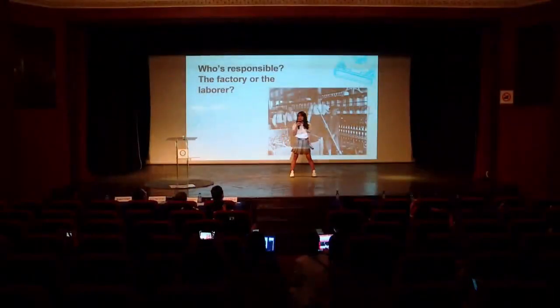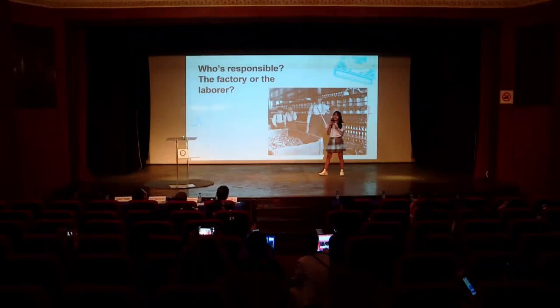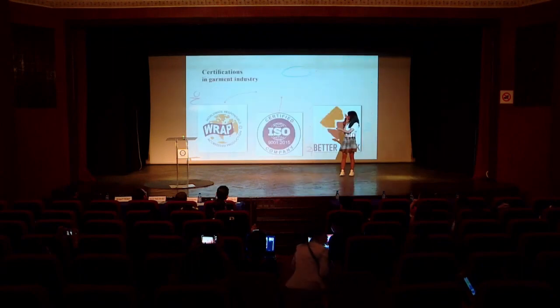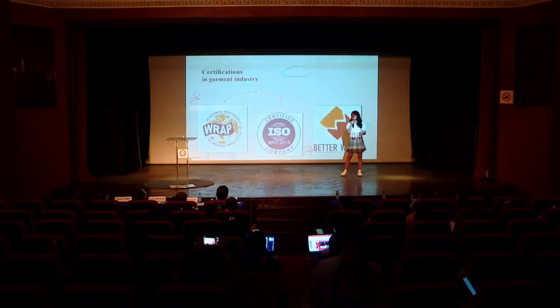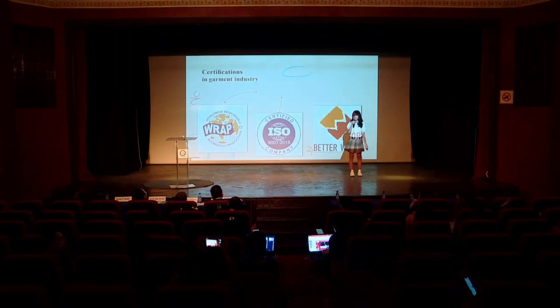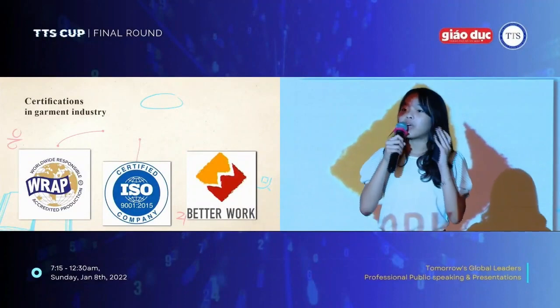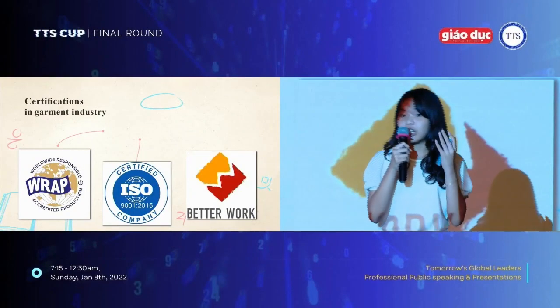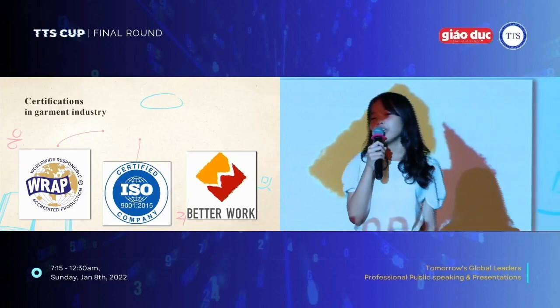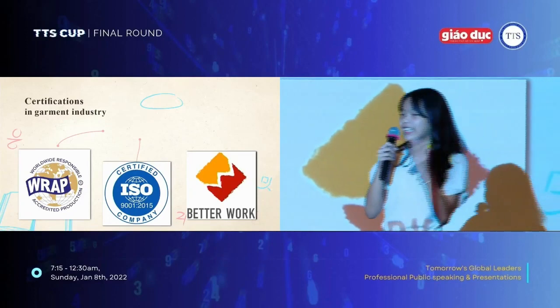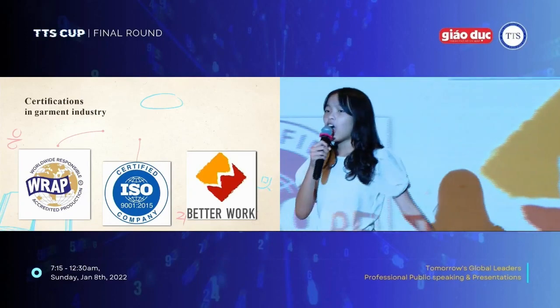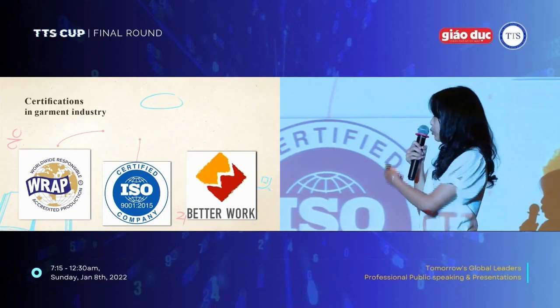But you need to think about the regulations. In order for these companies to be legally permitted to operate, they need to be granted certifications such as RAP, ISO, and Better Work. These certifications are not ordinary — they're only distributed to companies that follow guidelines and principles, such as no child labor. We can clearly see that the management of these certifications has already limited child labor with these rules.